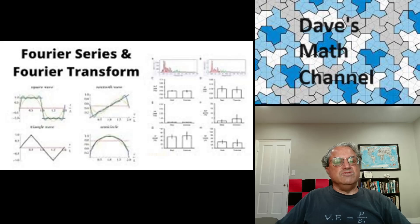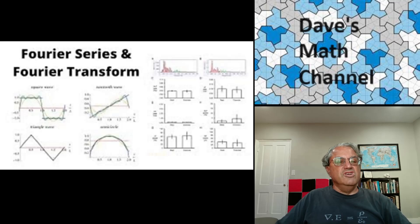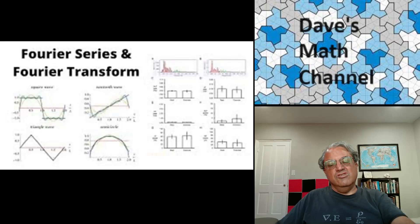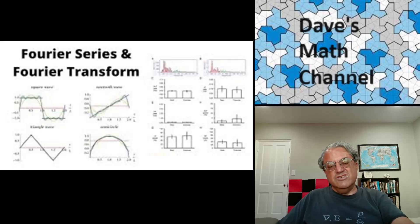Fourier transforms are sort of the continuous analog of Fourier series. It turns out Fourier series are discrete and Fourier transforms are continuous. But you can do the same kind of frequency analysis with Fourier transforms as you can do with Fourier series, just a little bit more complicated.